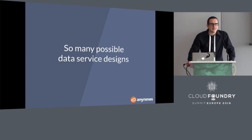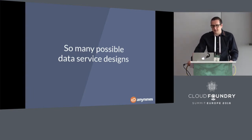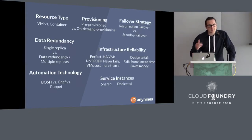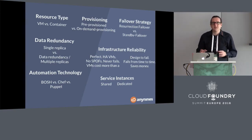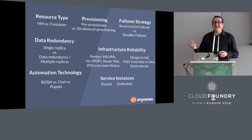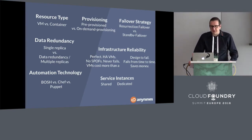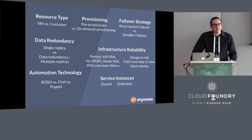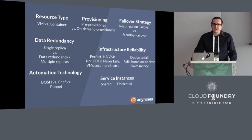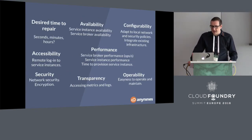When looking at data service design, there is a vast space of possibilities. Design decisions include attributes such as: what are you using as a service instance — shared instances served from a cluster, or dedicated instances? What kind of resource types are you applying — VMs versus containers? Are you provisioning virtual machines on demand or pre-provisioning them? What about your failover strategy — one replica of data or several? Depending on your particular requirements, there are a lot of design decisions to be made, and they have impact on the quality your service will offer.